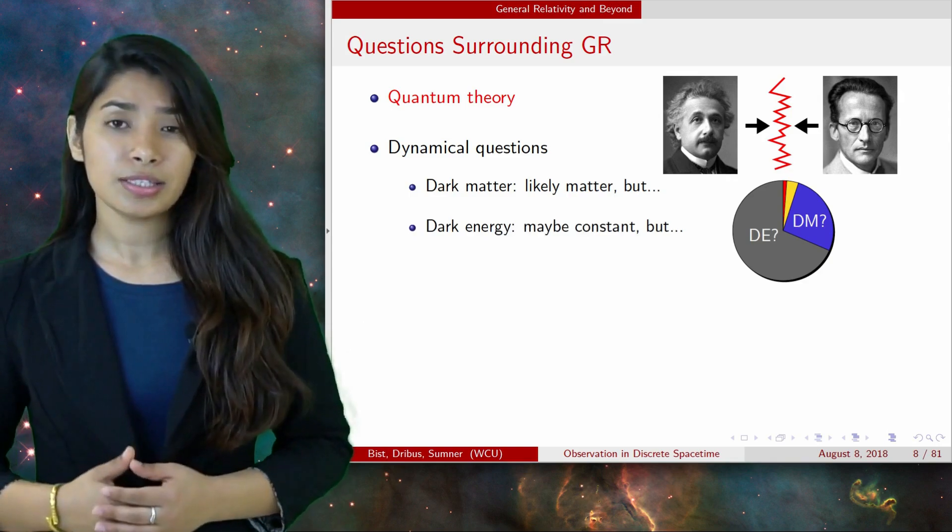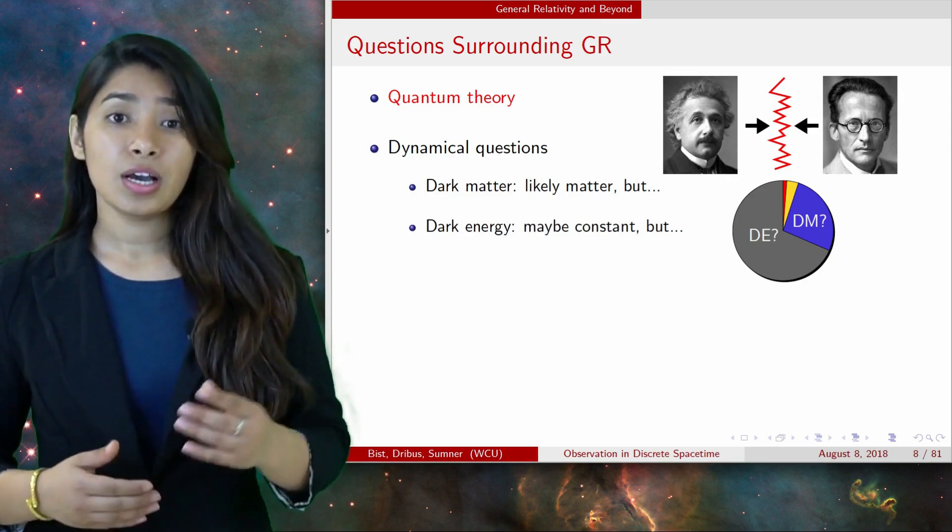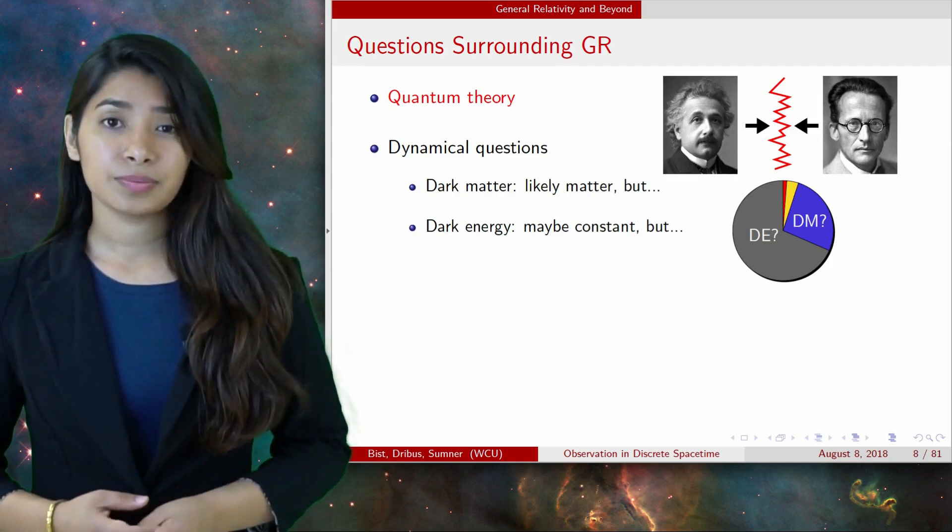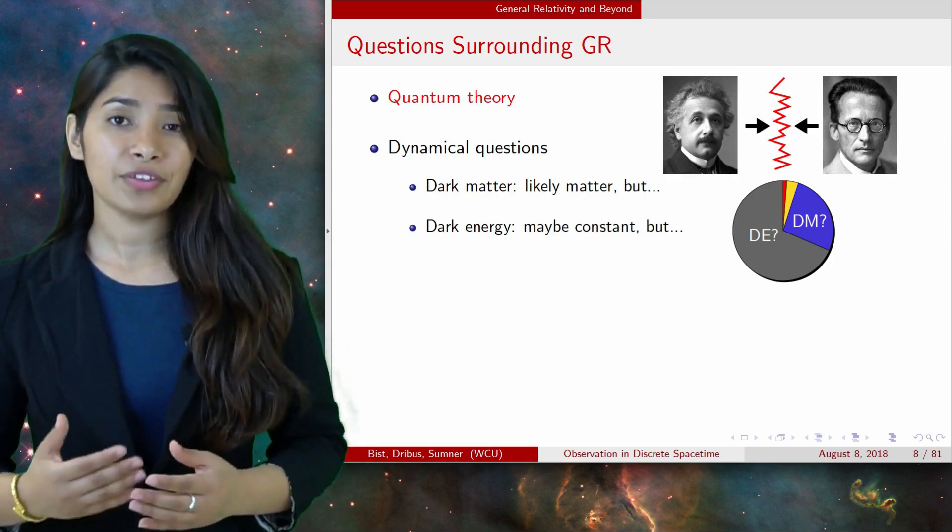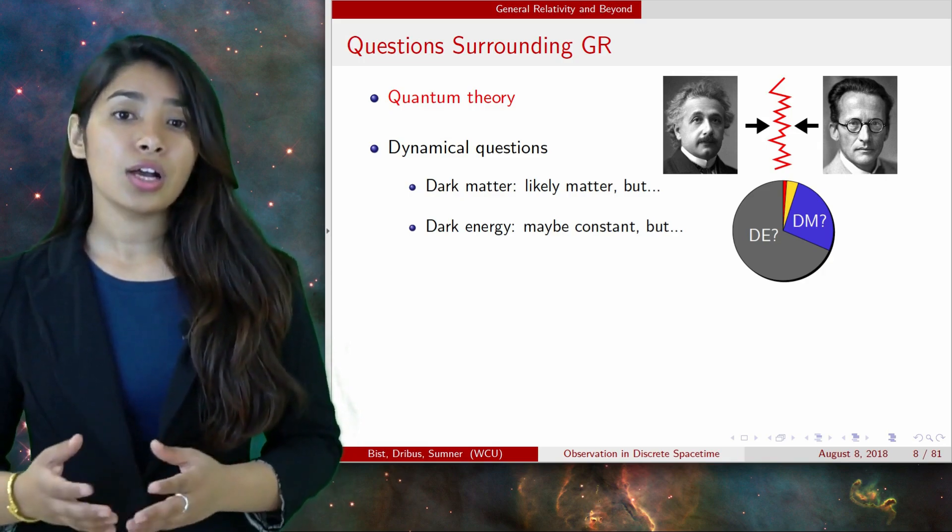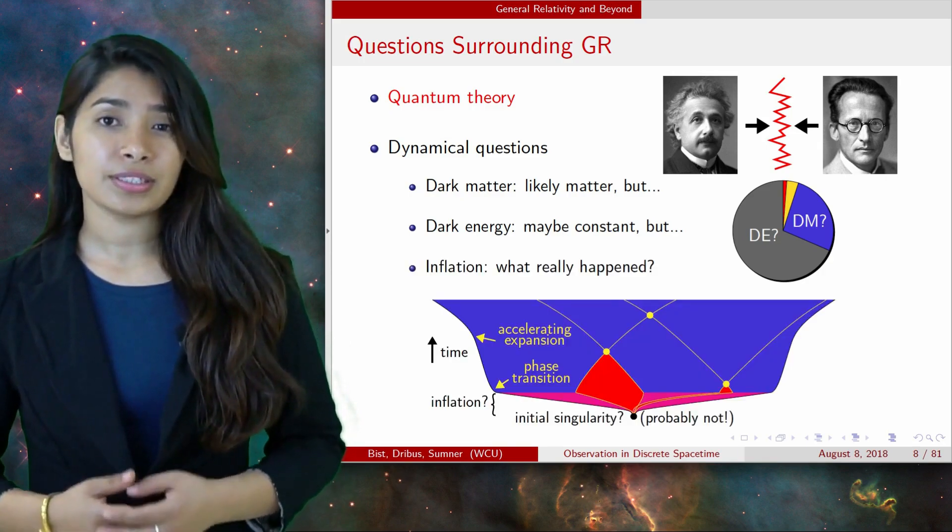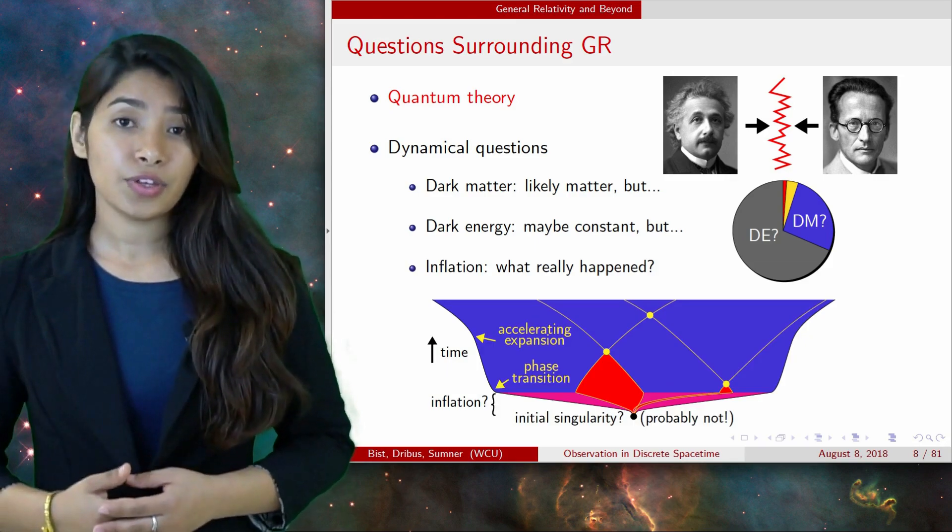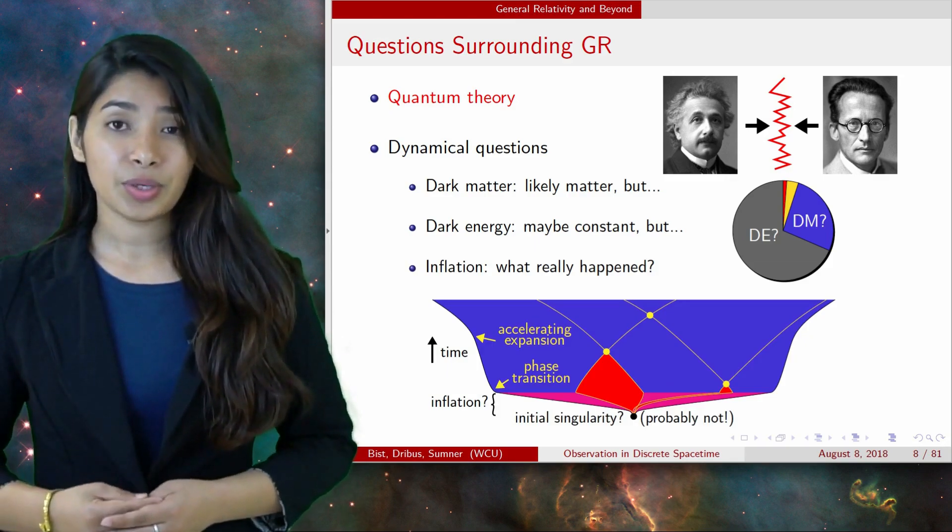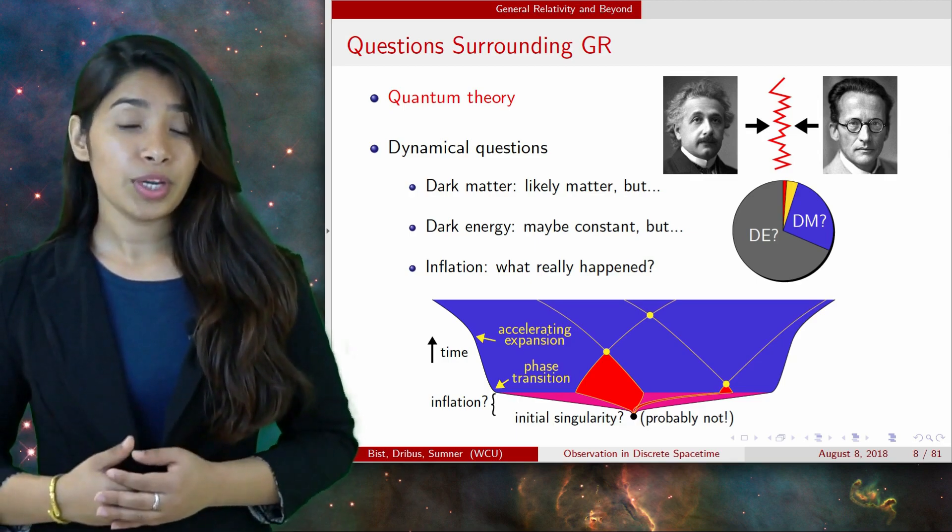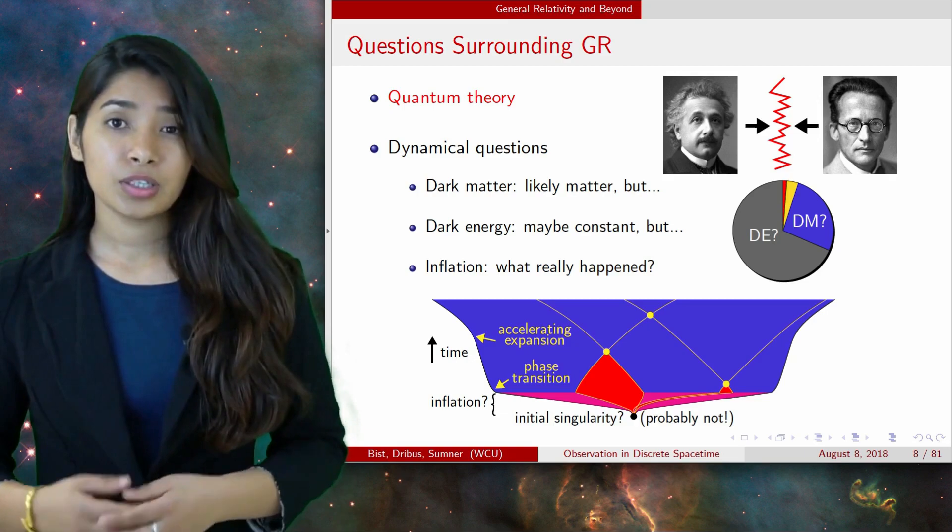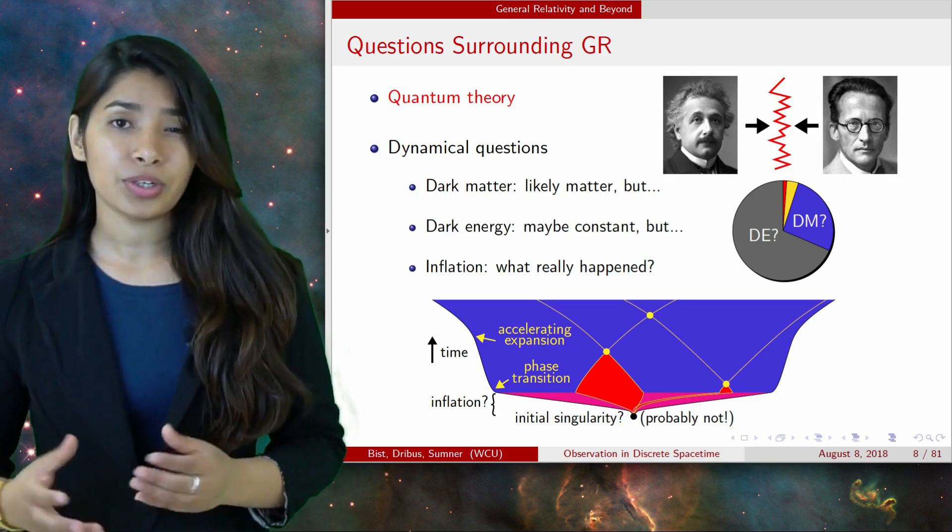Similarly, cosmological constant can be a good explanation of dark energy driving accelerating expansion of the universe. But again, we don't have enough direct evidence to support that. Also there is an inflationary hypothesis in cosmology of early universe. This phenomenon does explain a lot of things pretty well, but we are not sure what would have driven inflation in the first place. So we have to keep an open mind about what really happened.